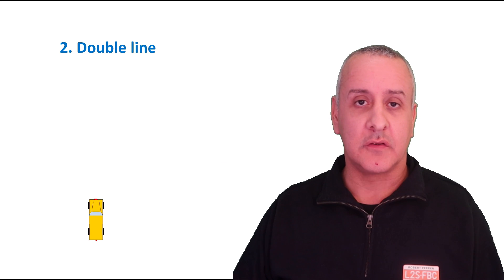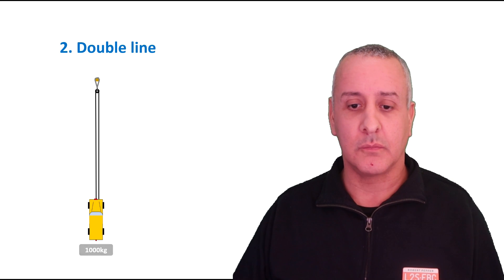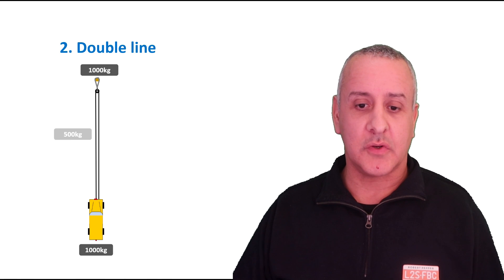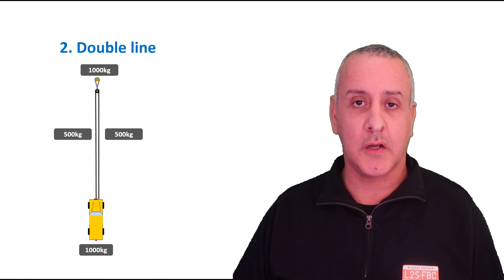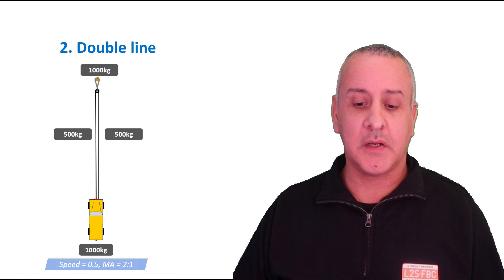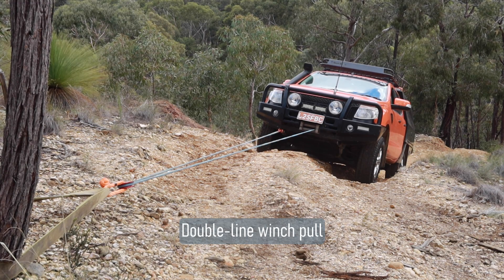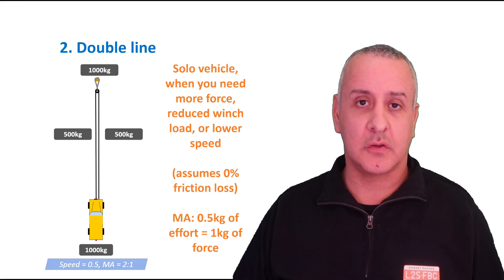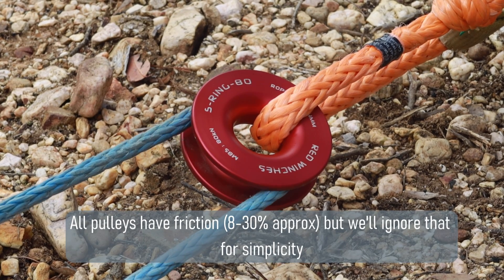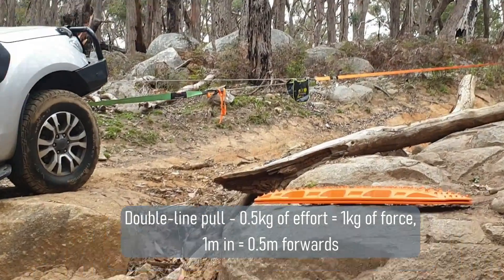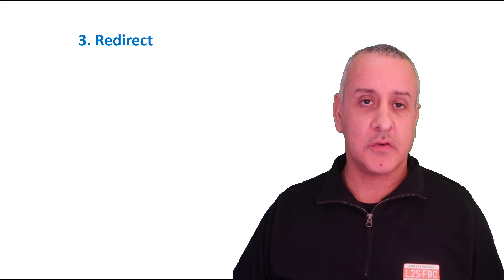Now we come to a double line pull. We've got the stuck vehicle and an anchor point, and we run a line up to the anchor point but this time put it around a snatch block and run it down to the vehicle. The vehicle takes a thousand kilograms to move and there's a thousand kilograms on the anchor, but because the force is suspended over two lines — imagine the vehicle hanging in the air off two lines — there's only 500 kilograms of force on each line. The speed is half and the MA is 2-to-1: for every metre of line taken in, the vehicle only moves half a metre. I'm assuming zero percent friction loss on the pulley; in reality it'll be between eight and thirty percent depending on your pulley type.